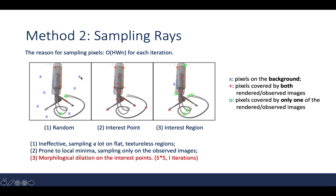The blue X in the figure represents pixels on the background, the red plus represents pixels covered by both the rendered and observed images, and the green circles represent pixels covered by only one of them. The random sampling method is ineffective since it samples heavily on flat and textureless regions. The second method uses interest point detectors to sample on the observed image, but since sampling on the rendered image is computationally intensive, it is prone to local minima. The authors propose an interest region sampling method, which performs many iterations of 5×5 morphological dilations on the interest points, so sampling points can fall on the background, or be covered by both images, or by only one of them.